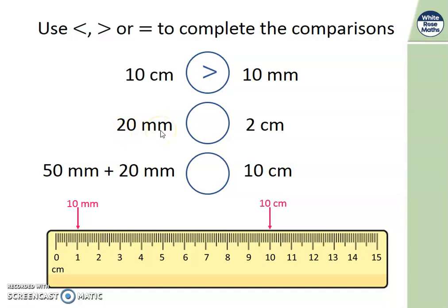20 millimetres. Where would that be on my ruler? Well, we know that this at 1 centimetre is 10 millimetres. So 20 millimetres is another 10 millimetres. So that's here. And 2 centimetres is in the same place. So they are equal to each other. Have a look at this one. 50 millimetres add 20 millimetres. What does that make? That makes 70 millimetres. And that's there. Where would I put 10 centimetres? That's there. So is this bigger or smaller? It's smaller. So we need the less than symbol in here. Well done if you work that out.